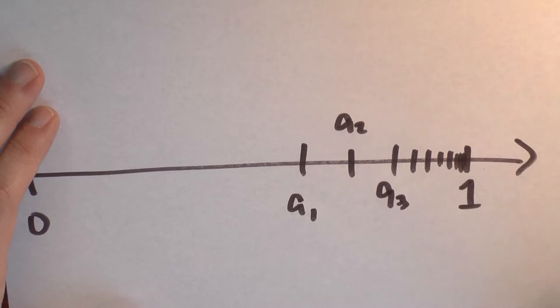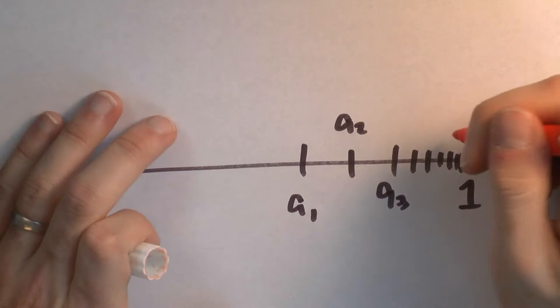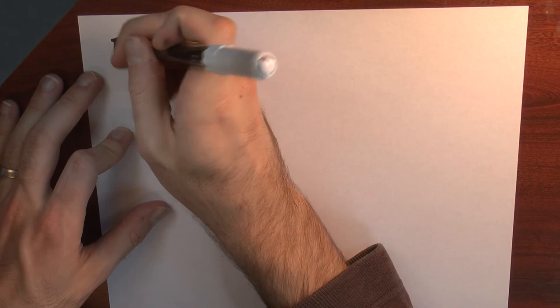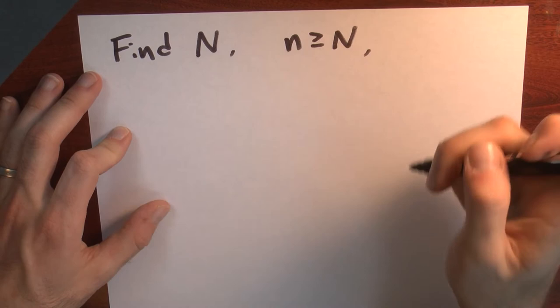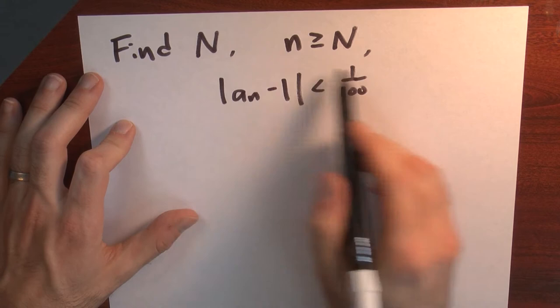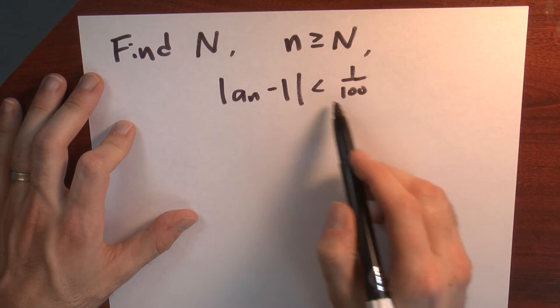And the question is how far do I have to go out in the sequence to guarantee that I'm within some epsilon of 1? Now let's suppose that I want to be within a hundredth of 1. How big does n have to be? So what I want to do is find a value for big N so that whenever little n is bigger than or equal to big N, I get that the nth term of my sequence is within one hundredth of my limit 1. This is telling me that the nth term is within epsilon - epsilon being one hundredth in this case - of my limiting value 1.